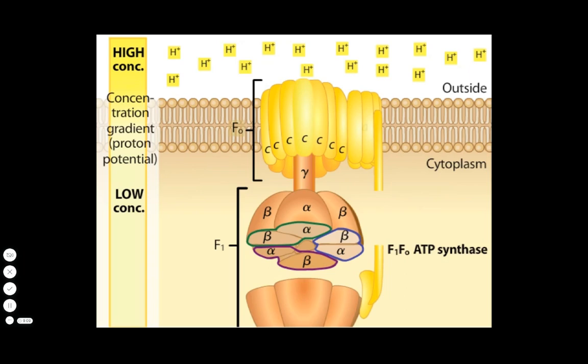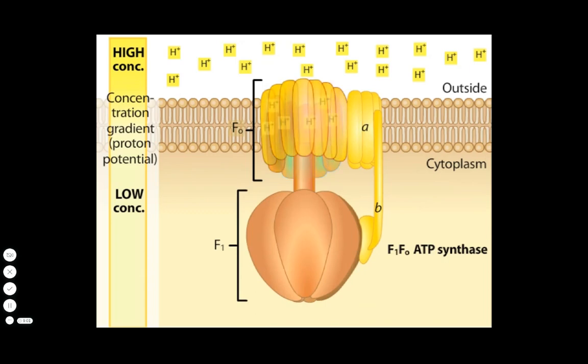Other subunits designated A and B connect the F1 knob to the membrane. The proton gradient across the membrane drives F0 to rotate.